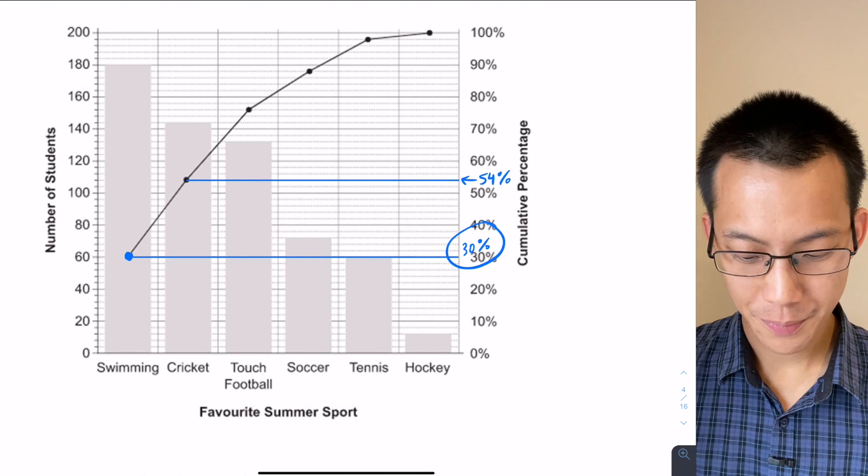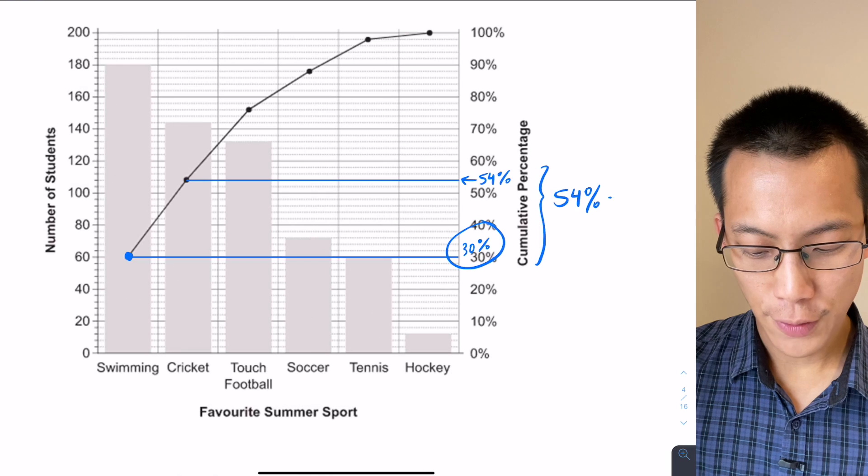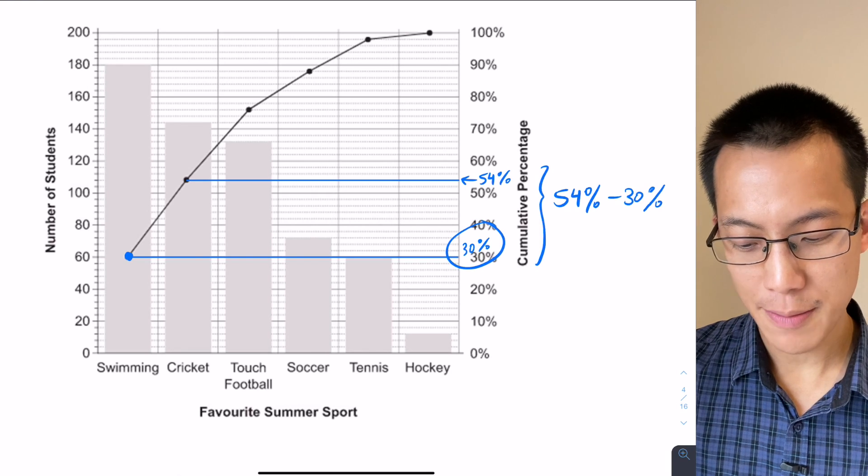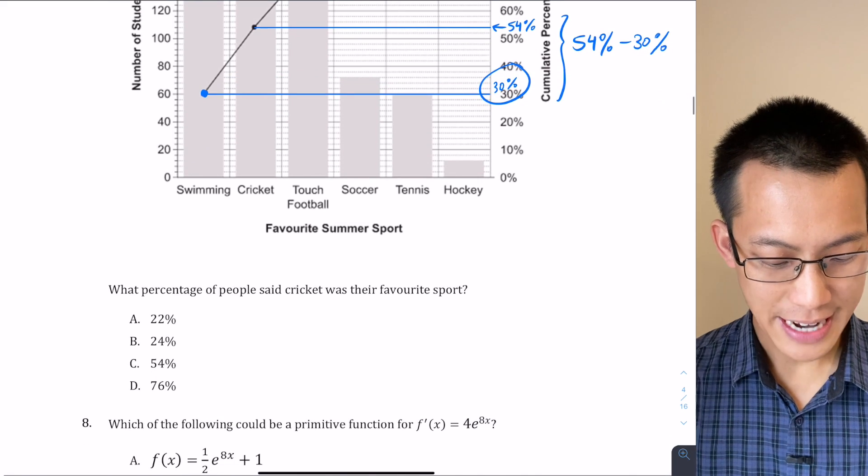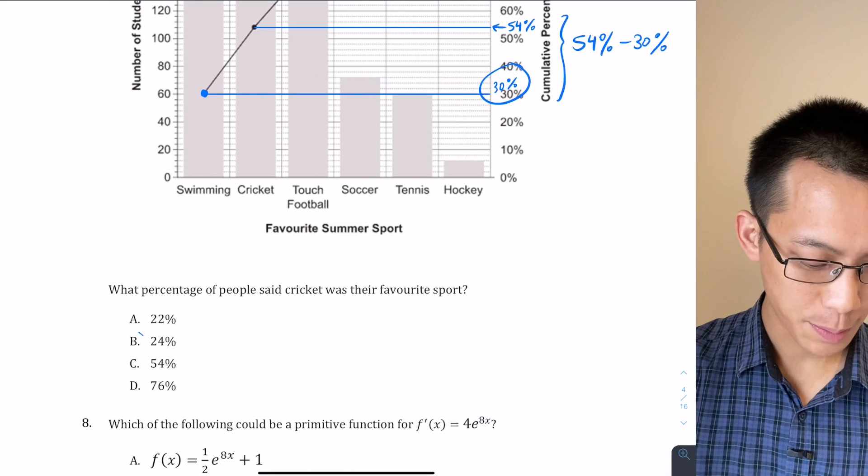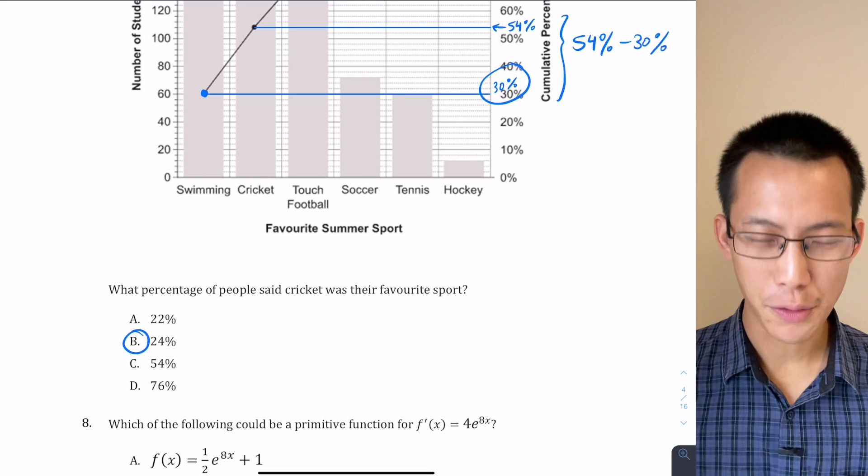So therefore, I would say for just cricket, it's going to take these two calculations, or these two numbers rather—54% take away 30%—and that's going to give me just the cricket figures, which, as you can see if you have a look down in the possible answers there, that's part B, for 24%.